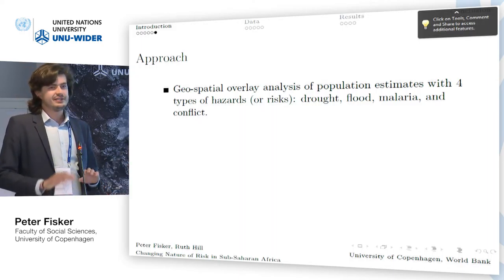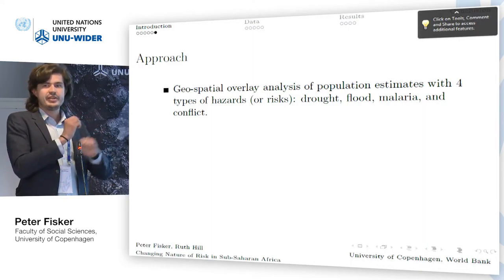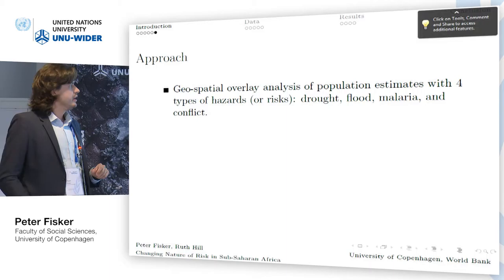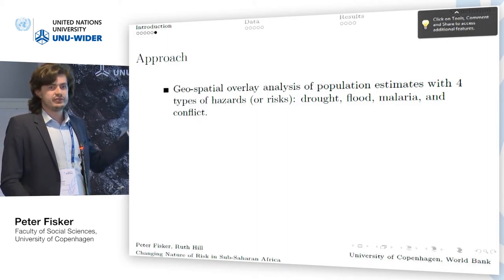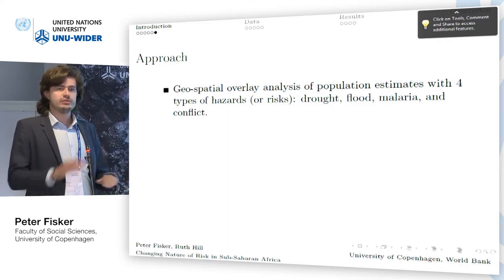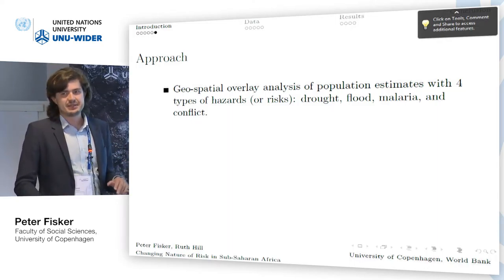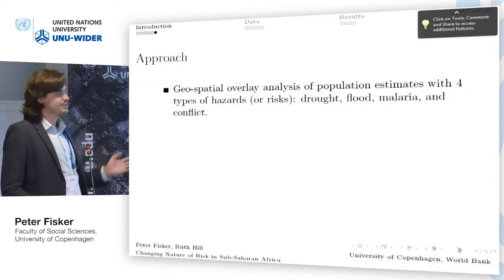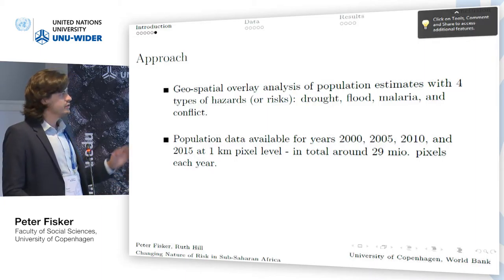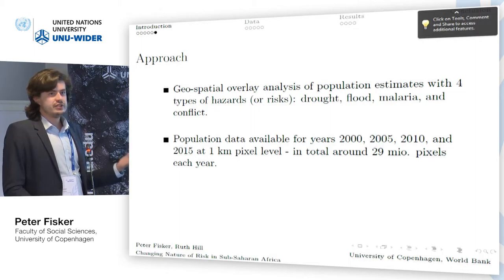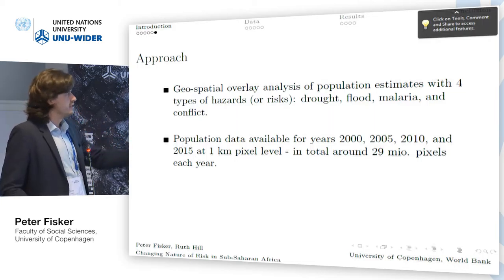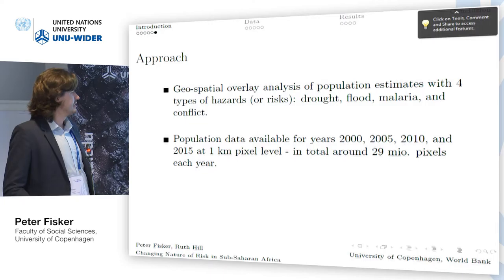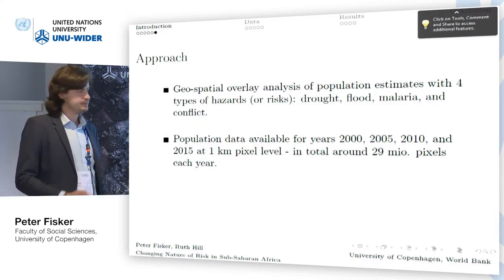It's actually very simple in a way. We just divide Africa into tiny pixels of one by one kilometer, and then we have an idea of how many people live in each pixel and what is the risk of each type of hazard to occur in each pixel. So it's simply a geographical overlay analysis — more geography than economics. The population data is available for 2000, 2005, 2010, and 2015. There are 21.29 million pixels each year, so we have a lot of observations at a very detailed level.